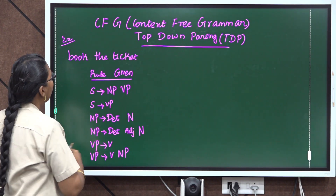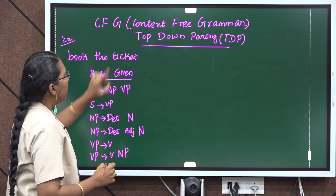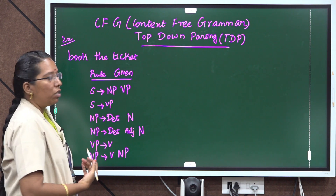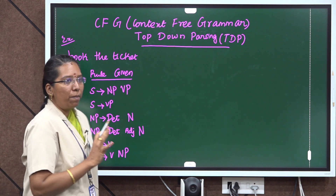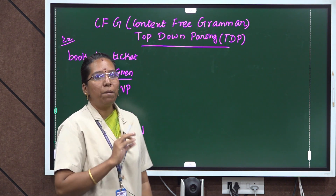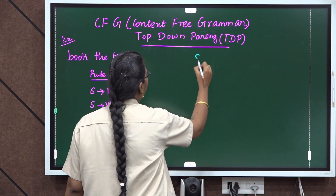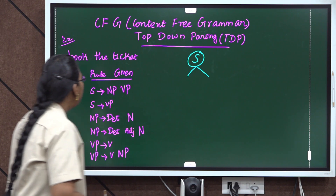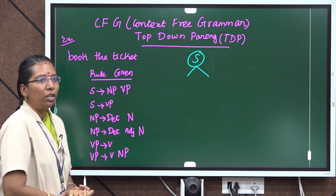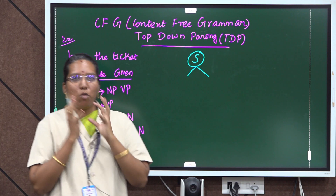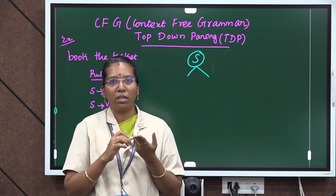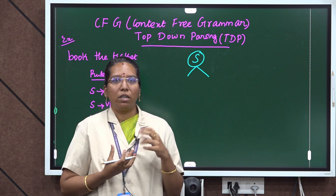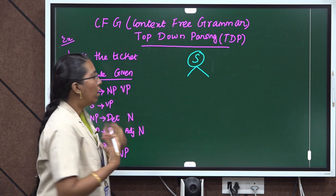Here is one example: 'Book the ticket.' I am going to do top-down parsing. These are the rules. Top-down parsing means we start from the starting symbol. If we take 'book,' it has two different meanings — book can be a noun (object) or book can be a verb. So here, what context will be there?